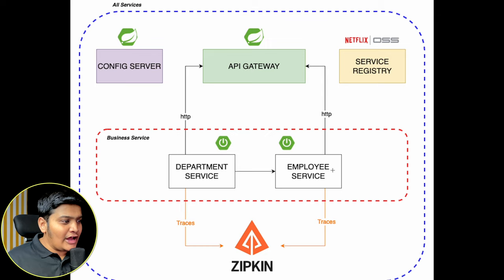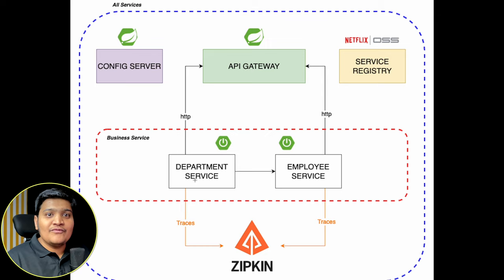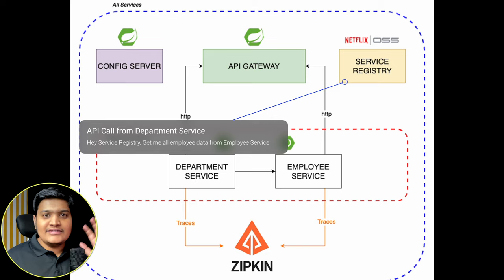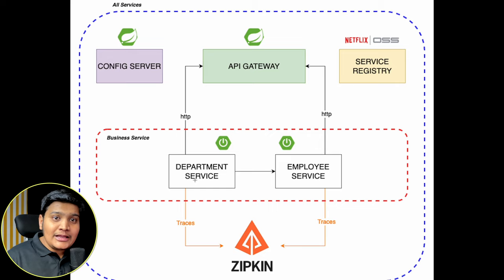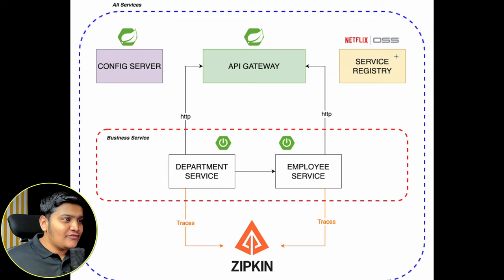Another advantage: suppose I want to call Employee Service from Department Service — Employee Service has five instances, so which one do I call? I'll point to the Service Registry and say I want data from the Employee Service. The Service Registry will handle load balancing between all five instances and return the data. So load balancing is also done by Service Registry, provided by Netflix OSS. All dependent services will be clients for that Service Registry.